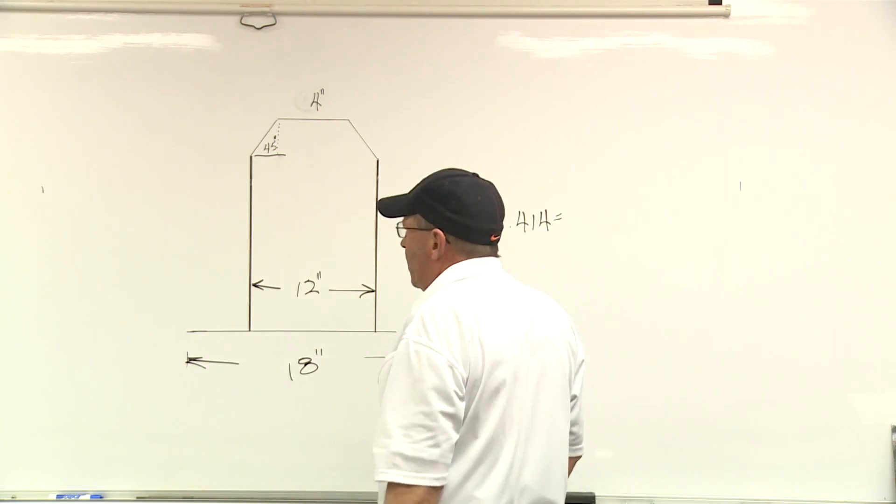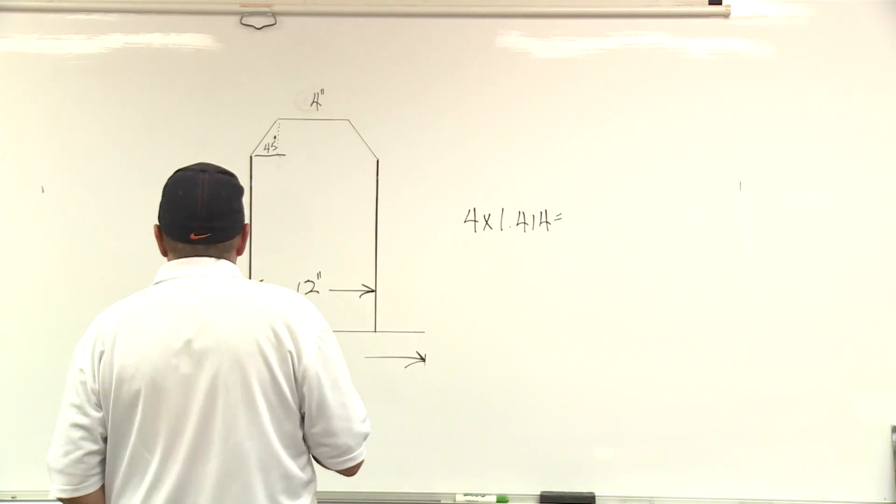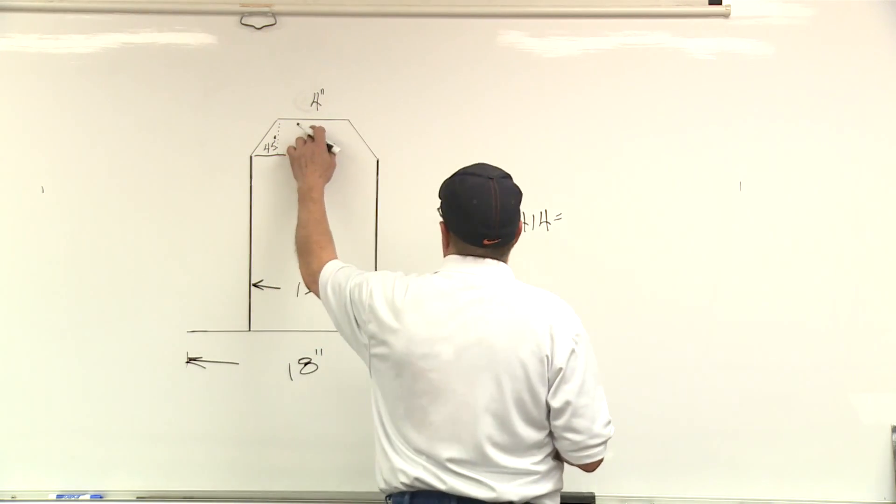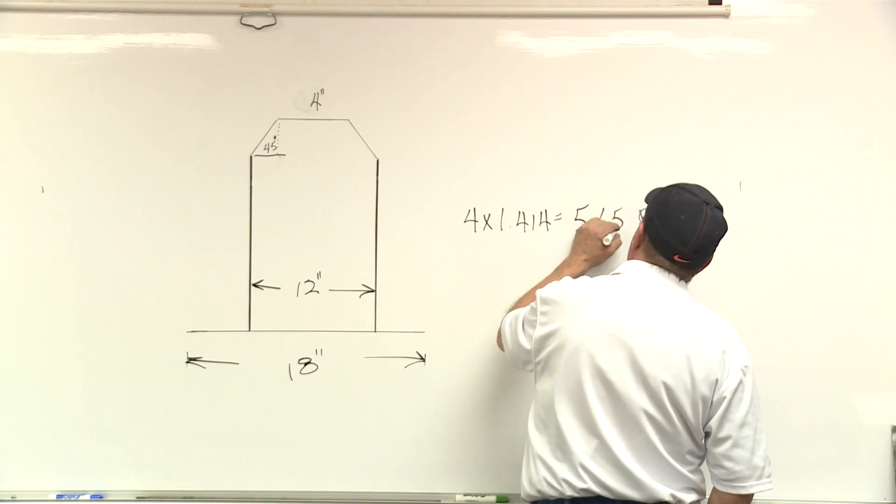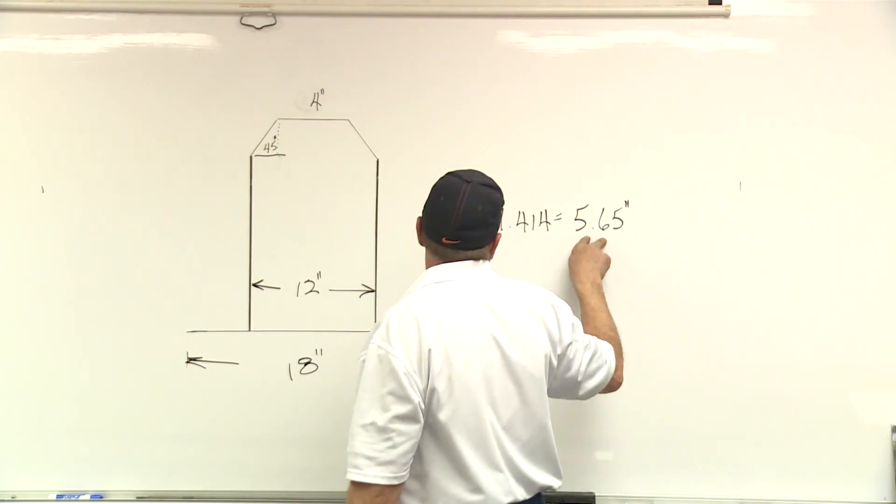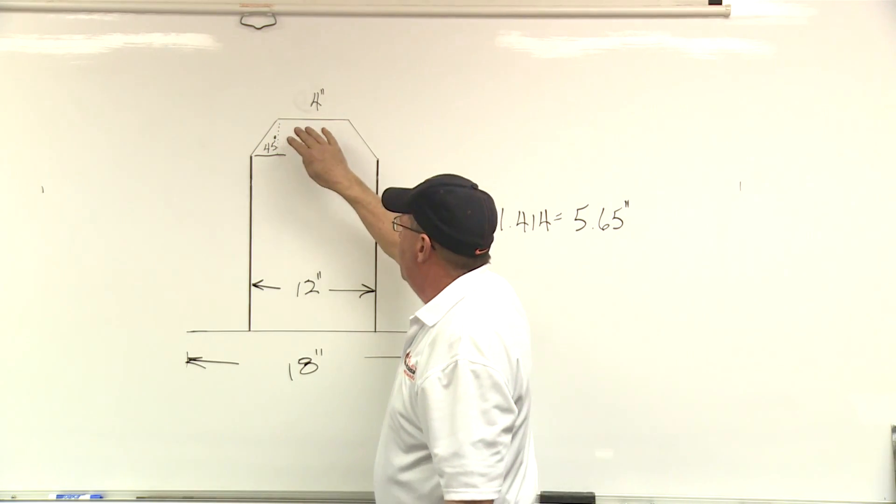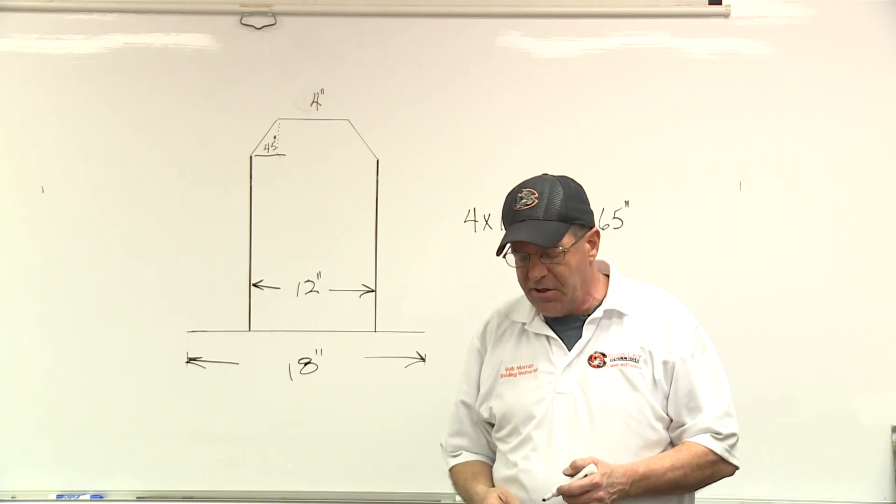Okay. So if we did that, then our piece, this one could be four. This one is going to have to be 5.65 inches. And that's fine. We just have to cut one. We have to cut two of them off at 5.65 and one of them at four inches. I realize that's not drawn to scale. Please forgive me.